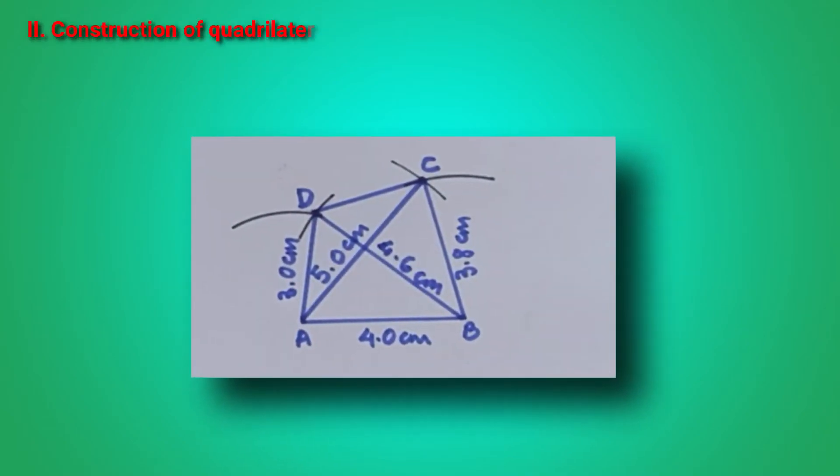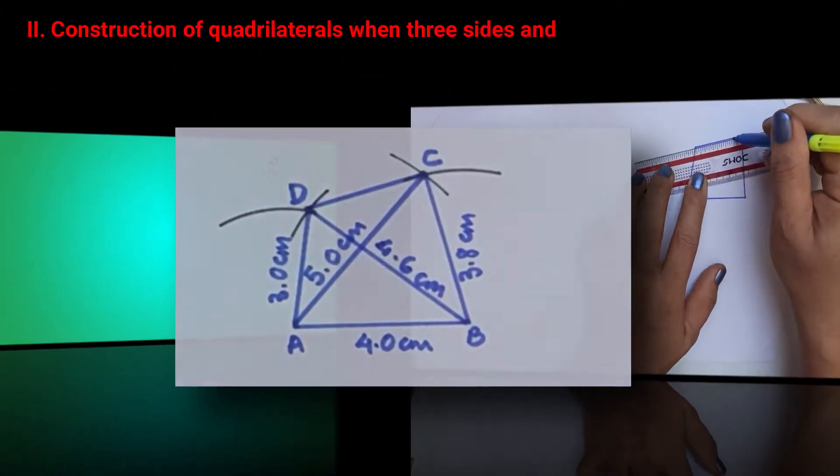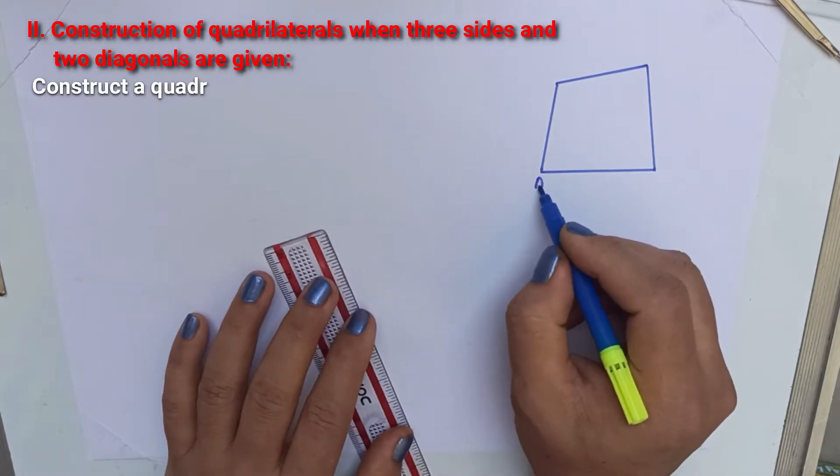In this video we are going to learn how to construct a quadrilateral when three sides and two diagonals are given.